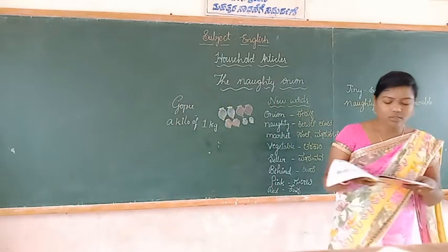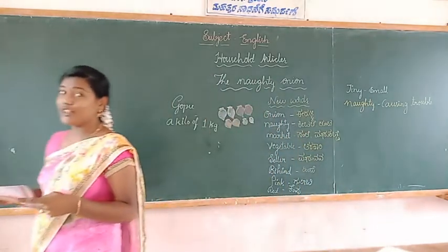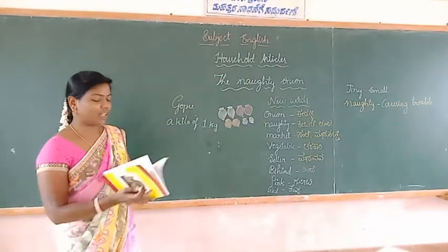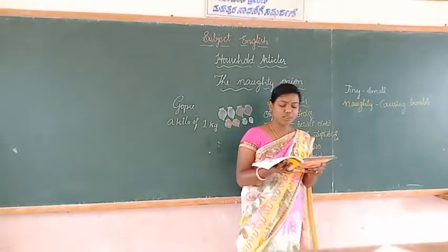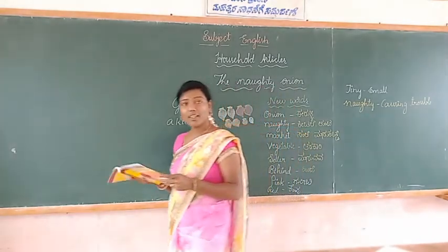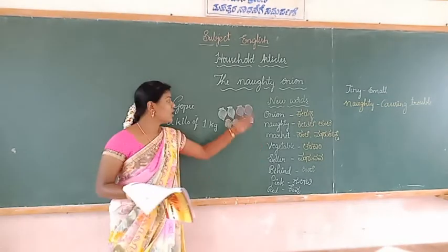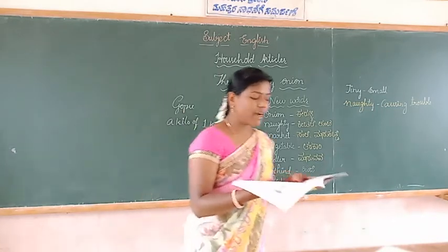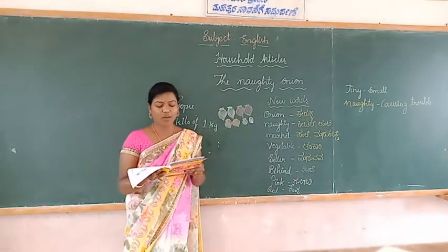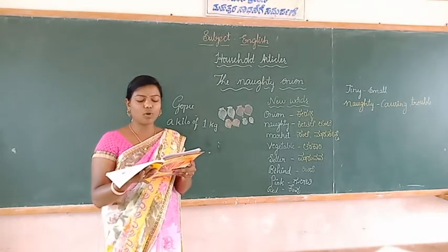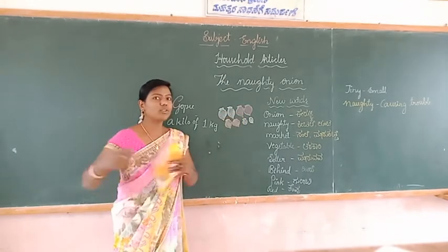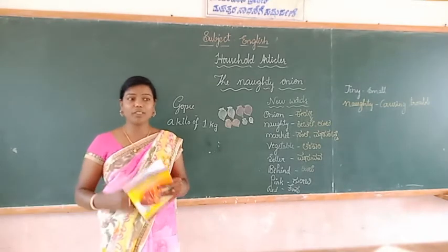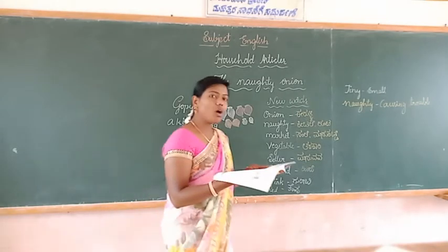There was one naughty pink onion in the pocket. Naughty means 'Kitalet, Tunta.' He told the other onions to jump out of the pocket. The naughty pink onion told the others to jump out. Some went under the cupboard, some went into the corner, some hid behind the dustbin. All the onions went everywhere.